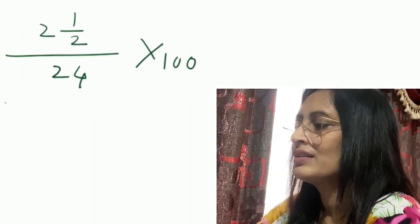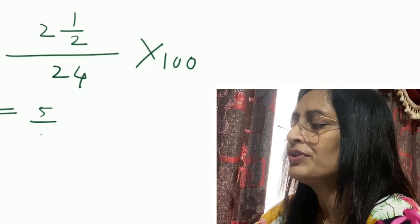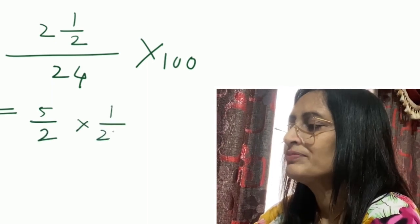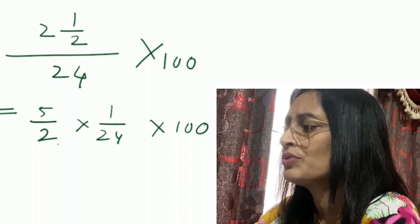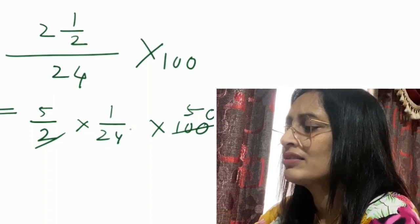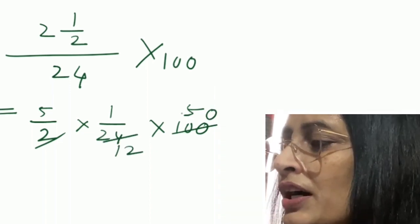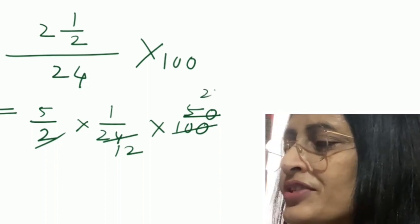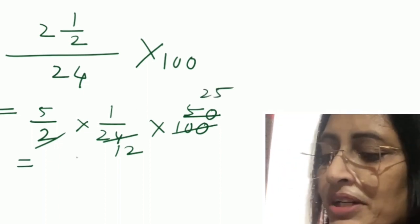Now we'll convert it to percent, just like our question number one, very easy. 100 se multiply karna hai, multiply kar liya. Now I'm simplifying it: 5 by 2 into 1 by 24 into 100. Now I'll simplify it. I'll cut it by 2: 2 ones are 2, and 2 fifties are 100. Again I'll cut by 2: 24 and 50. 2 twelves are 24, and 2 twenty-fives are 50. And yes, we can't make it simpler anymore. This is the simplest fraction.